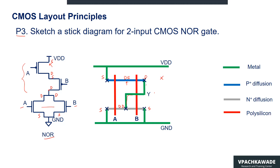Contacts are indicated by the black cross marks. We use contacts to connect metal lines to the corresponding layers, whether polysilicon or active areas such as P-plus or N-plus diffusions. We have now completed the layout for the CMOS NOR gate.